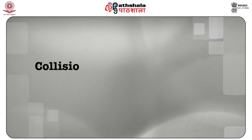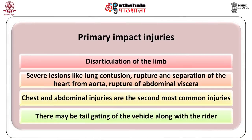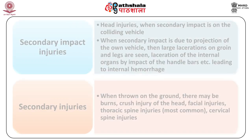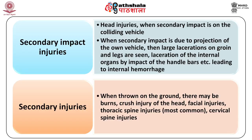Run-over injuries may occur if the rider is hit by another speeding vehicle. Strangulation is rare but may occur due to the pull of the helmet string around the neck. When the motorcycle collides with another vehicle, primary impact injuries may include disarticulation of a limb, lung contusion, rupture and separation of the heart from the aorta, and rupture of abdominal viscera. Chest and abdominal injuries are the second most common injuries in fatal motorcycle crashes. Secondary impact injuries when impact is on the colliding vehicle include head injuries; when caused by projection against the own vehicle, large lacerations on the groin and legs and laceration of internal organs by the handlebars leading to internal hemorrhage. Secondary injuries when thrown on the ground include burns, crush injury of the head, facial injuries, thoracic spine injuries, and cervical spine injuries.